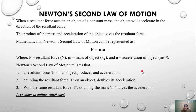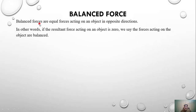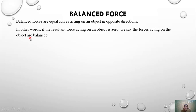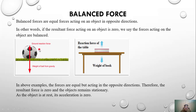Now moving towards balanced forces. Balanced forces are equal forces acting on an object in opposite directions. Suppose two persons are applying equal forces on an object in opposite directions — those two forces will cancel out, and there will be no resultant force. That is known as a balanced force. In other words, if the resultant force acting on an object is zero, we say that balanced forces are acting on the object.